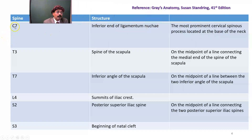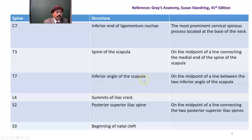At the spine of C7, cervical vertebra 7, we have the inferior end of the ligamentum nuchae. C7 is the most prominent cervical spinous process located at the base of the neck, so it is called vertebra prominens. At T3, we get the spine of the scapula — on the midpoint of a line connecting the two medial ends of the spine of the scapula is the spine of thoracic vertebra T3. At T7, the inferior angle of the scapula — on the midpoint of a line between the two inferior angles of the scapula, we get the spine of T7. Lumbar L4 is located at the highest point of the iliac crest.